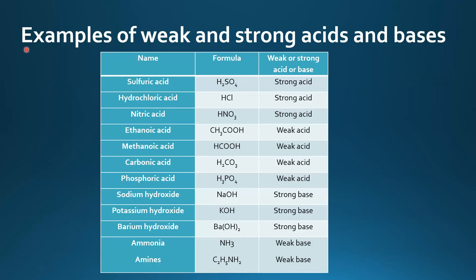Next we look at some examples of weak and strong acids and bases. Starting with strong acids: there's sulfuric, hydrochloric, and nitric. Sulfuric acid is a diprotic acid; hydrochloric and nitric are called monoprotic acids. Diprotic means it has 2 hydrogen ions; monoprotic means it has 1 hydrogen ion.